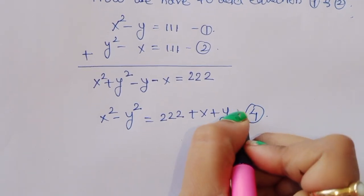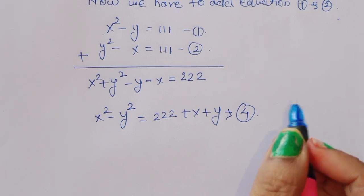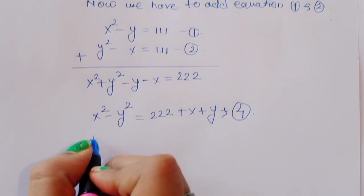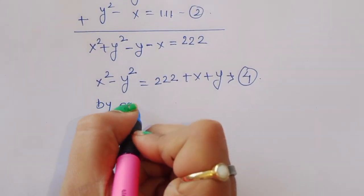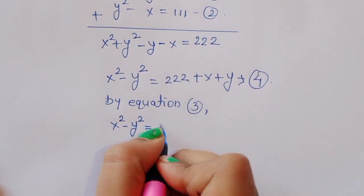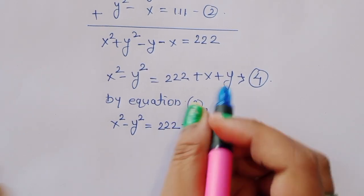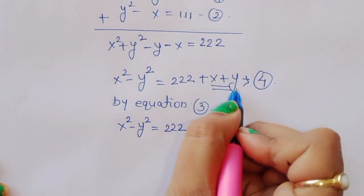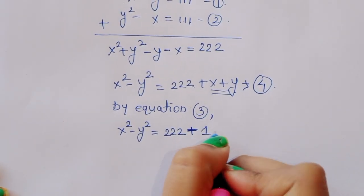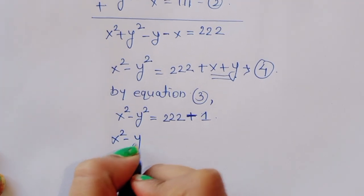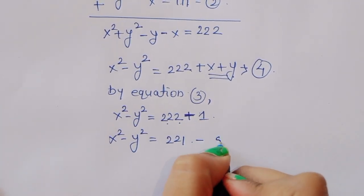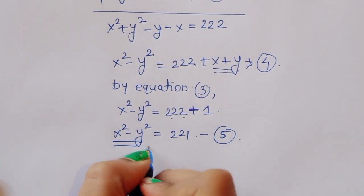We know from equation 3 that x plus y equals minus 1. Substituting into equation 4: x squared plus y squared equals 222 plus (minus 1), so x squared plus y squared equals 221. This is equation 5.